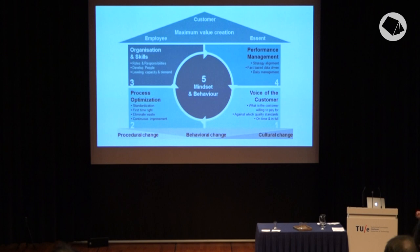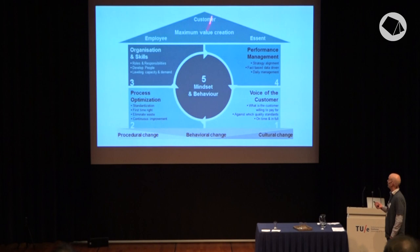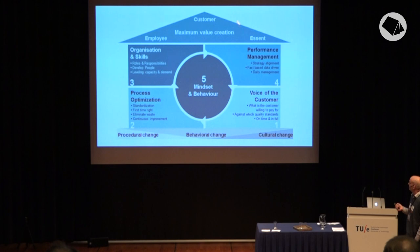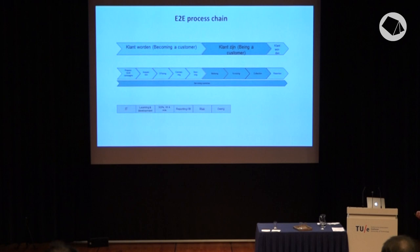Why was he asking for this information? Of course, he wanted to get in control of his business unit and start the improvement process. At Ascent, we created a very important continuous improvement program called the House and Order Program. The goal is to create maximum value for our customers, employees, and the company. We evaluate our activities through five lenses. The main driver of this improvement is the end-to-end process chain, consisting of two parts: becoming a customer and being a customer.